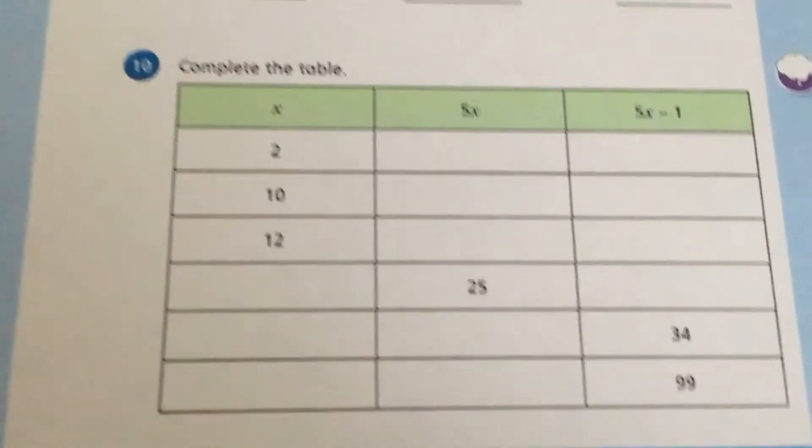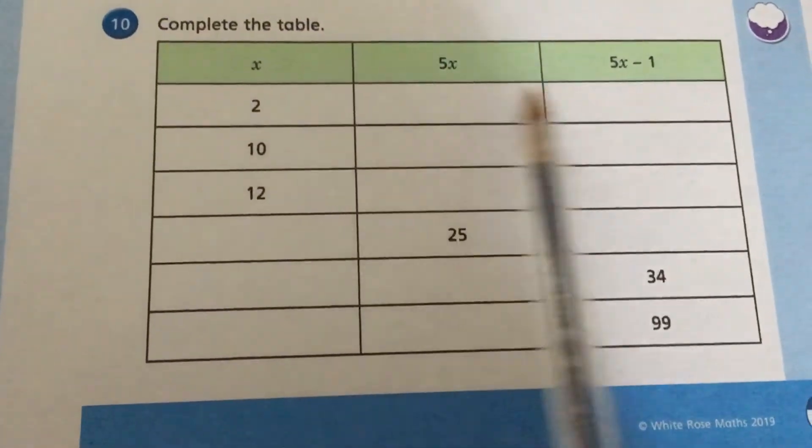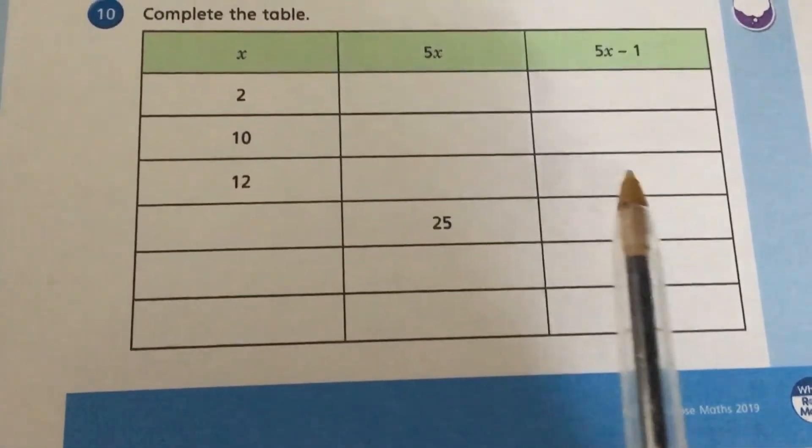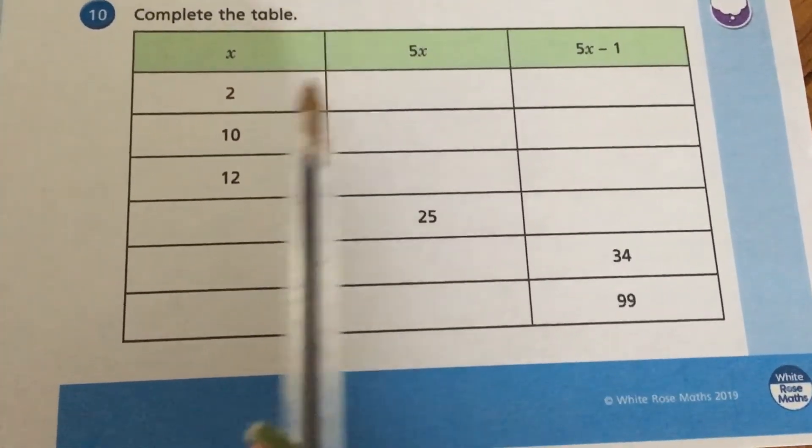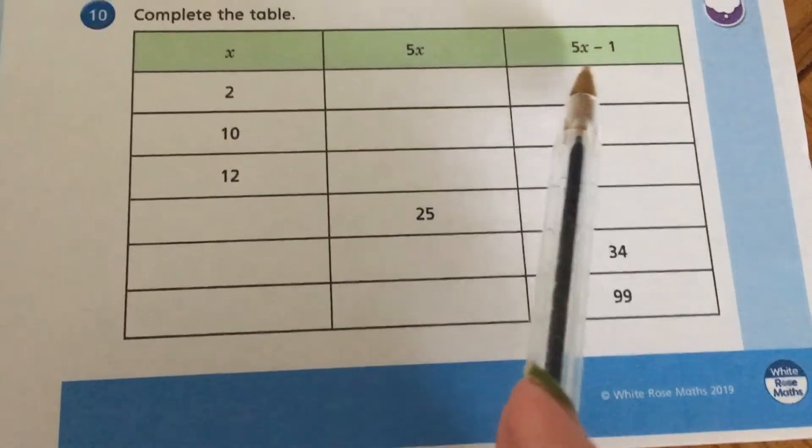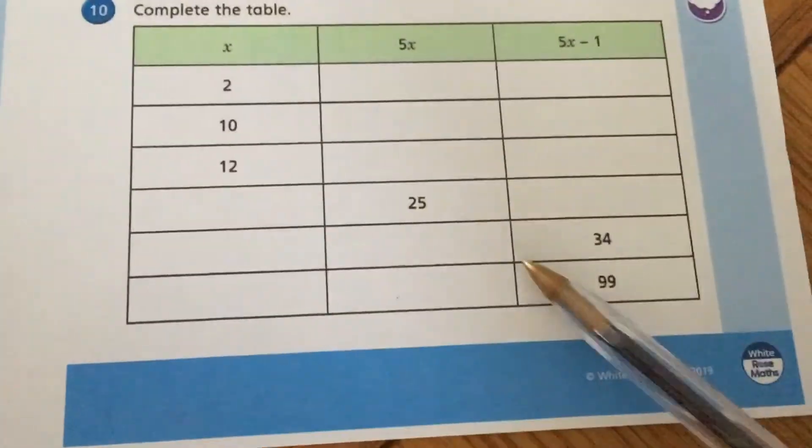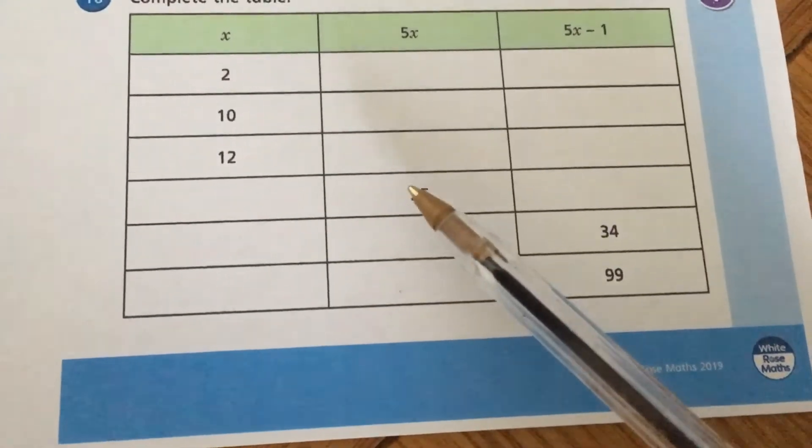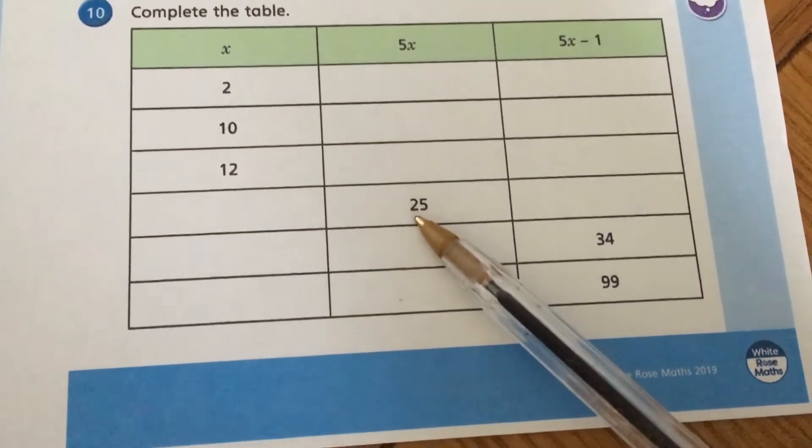The last question I'm going to come to is question 10. I'm confident that we'd be able to do the first three rows of filling in our table following that 5x is 5 lots of 2, 5x minus 1 is 5 lots of 2, and then taking away 1 and following them. I'm just going to come to the final three rows because we're not given what x is, so we've got to work out what x is.